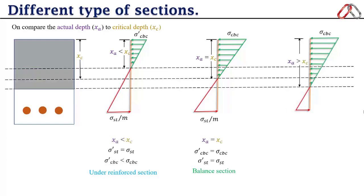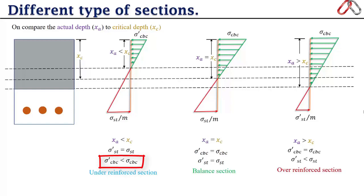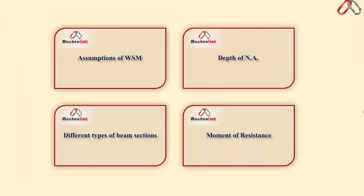When xa > xc, concrete actual stresses reach the permissible stress σ_cbc but actual stresses in steel σ'_st are less than permissible stress σ_st — we call this an over-reinforced section. To summarize: if both concrete and steel stresses reach permissible levels simultaneously → balanced section; if concrete stresses don't reach permissible → under-reinforced; if steel stresses don't reach permissible → over-reinforced.